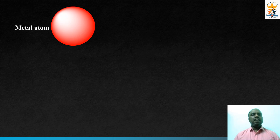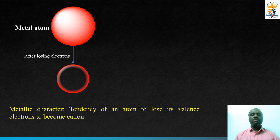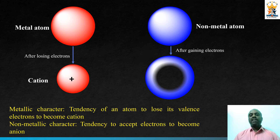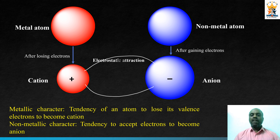Let us discuss how the ionic bond is formed from its neutral atoms. The metallic property is defined as the tendency of an element to lose its valence electron to become a cation. The neutral metal atom, after losing one or more electrons, becomes positive — it forms cations. The non-metallic property is defined as the ability of an element to gain electrons in its valence shell. Non-metal atoms, after gaining electrons, become anions. The electrostatic interaction between these two oppositely charged ions makes the ionic compound.